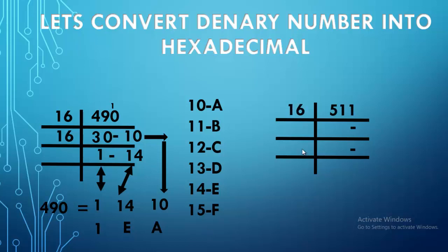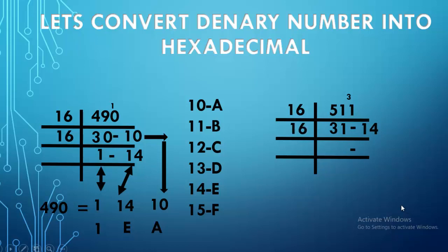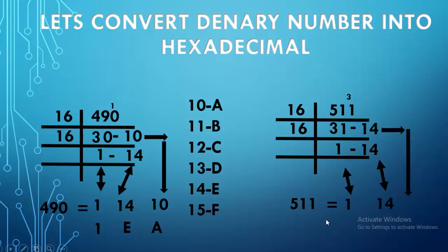Part D: denary number 511. Divide by 16: 16 times 3 is 48, remainder 3, giving 31. Divide 31 by 16: 16 times 1 is 16, remainder 14. Divide 13 by 16: 16 times 1 is 16 again, remainder 14. Writing the final value from top to bottom: 1, 14, 14. Since 14 equals E in hexadecimal, the final answer for 511 is 1EE.